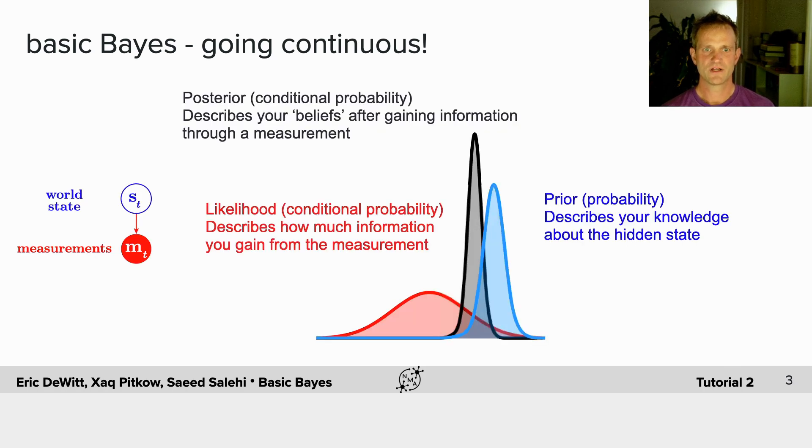So you're going to still have your likelihood, a conditional probability, but now it's going to be represented by a continuous probability distribution. You're going to have your prior, which is also going to be represented by a continuous probability distribution, and you're going to combine those to find a posterior, which will be a new continuous probability distribution.